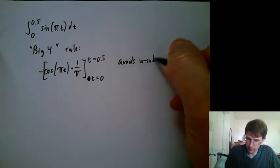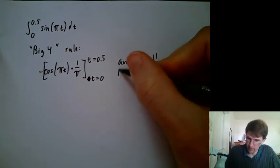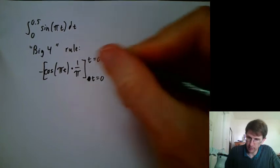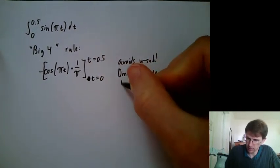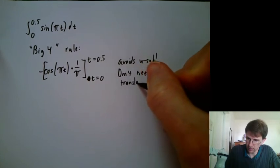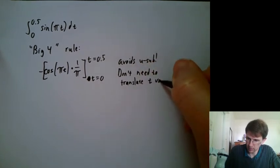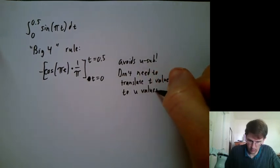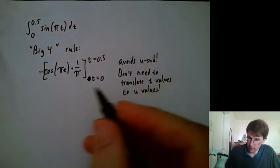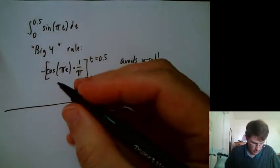So this is great, I think. So it avoids the u substitution. I don't need to translate t values to u values.